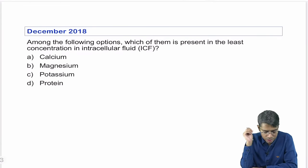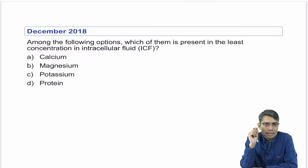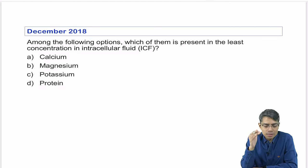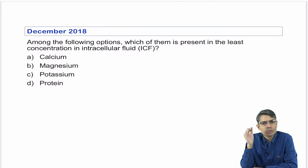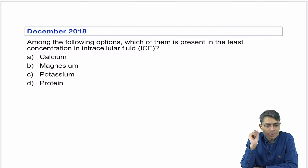Now moving to December 2018 questions. In June 2018, around 18 to 20 questions were asked from physiology. In December the number is slightly less, about 12 to 14.